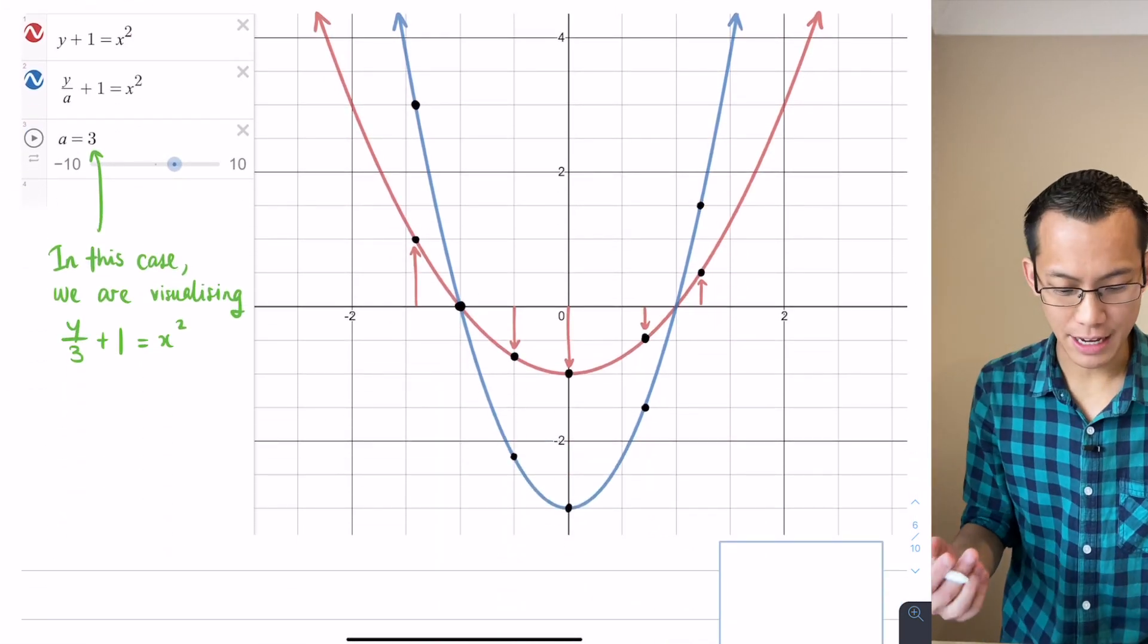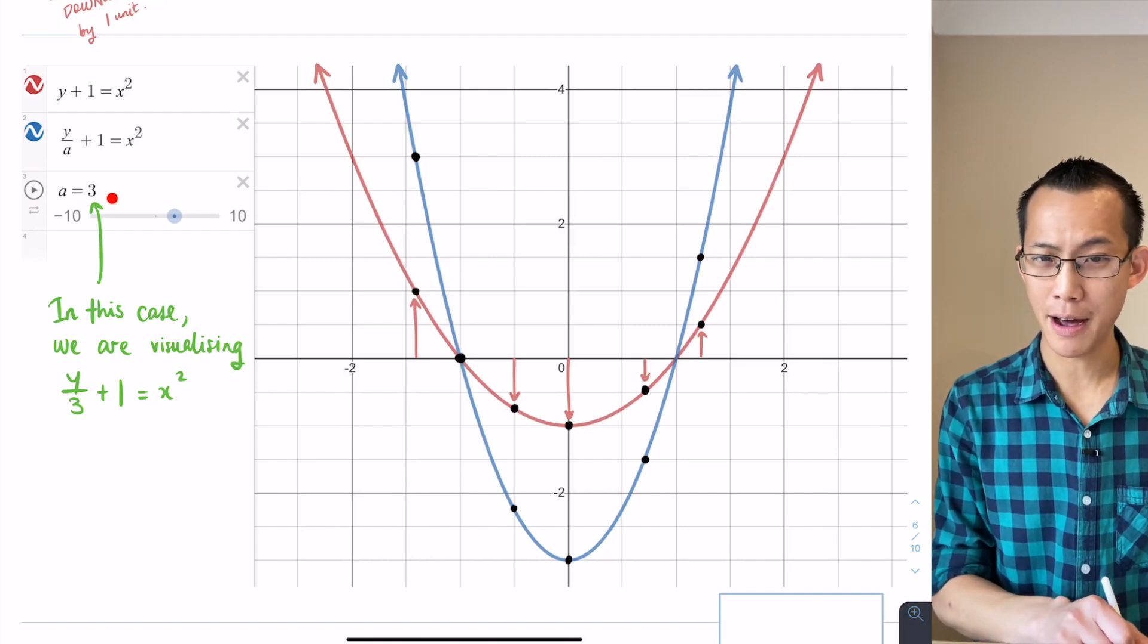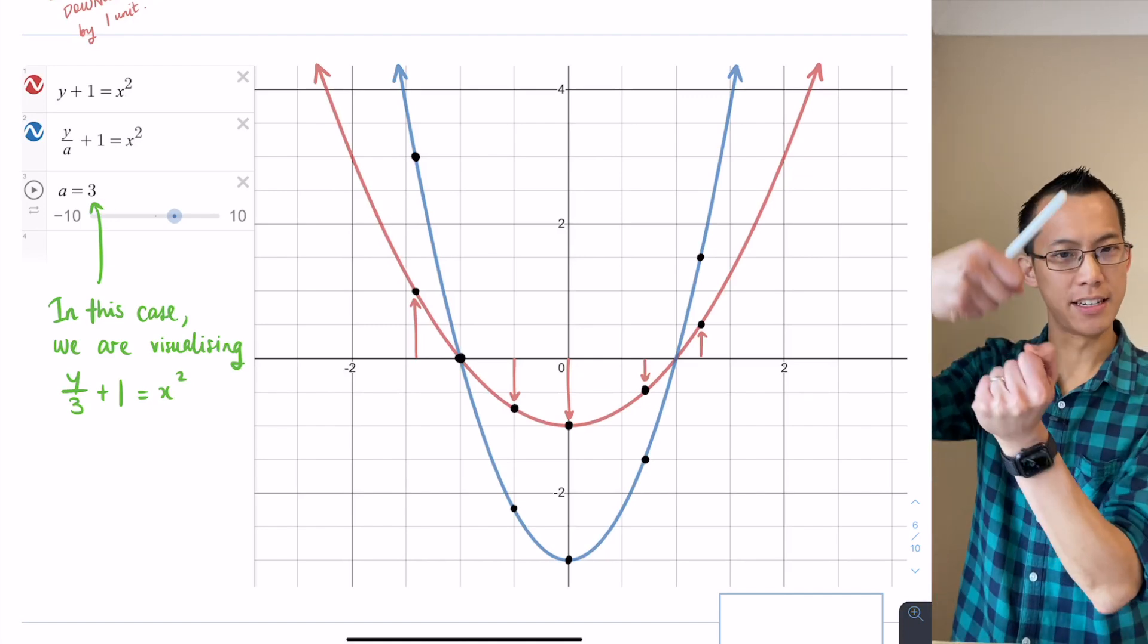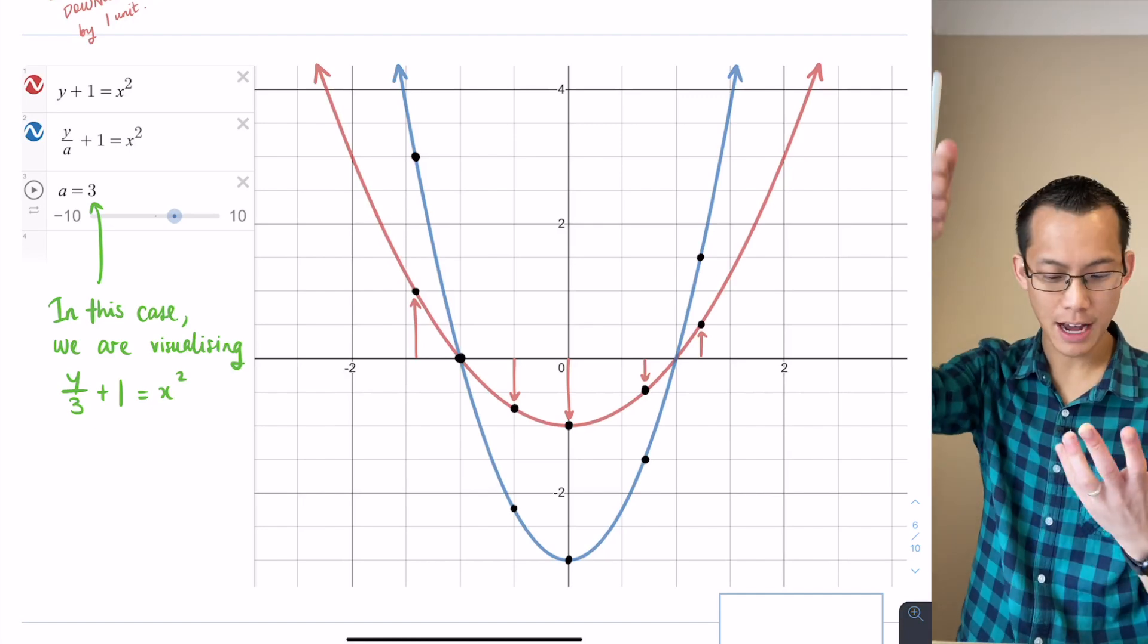This is a vertical dilation. This time I chose a different value to stretch by, you can see on the left hand side I'm stretching by a factor of 3, so therefore you should expect everything to not be double as far away, it's going to be triple as far away, three times as far.